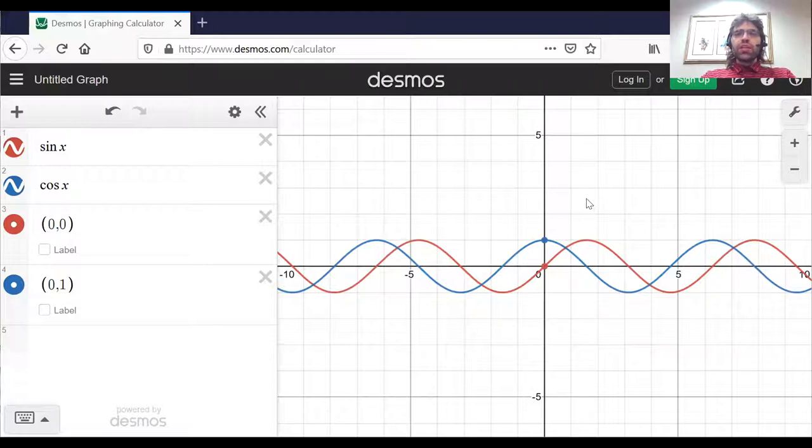But initially, at time zero, the sine curve is here, whereas at time zero, the cosine is up there.